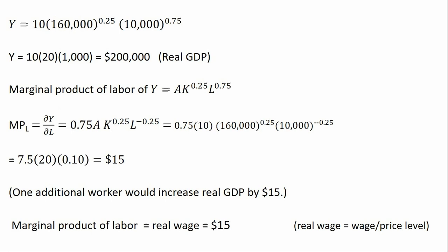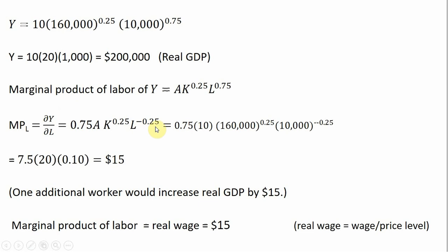The next step is to get the marginal product of labor from this production function. We derive the marginal product of labor, which is the partial derivative with respect to labor. Taking that partial derivative, we bring down the 0.75 in front, and then apply 0.75 minus 1, leaving us with L raised to the minus 0.25 power.